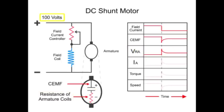Thus, if there is 100 volts applied and the CEMF is 80 volts, the drop across the resistance of the armature coils will be 20 volts.